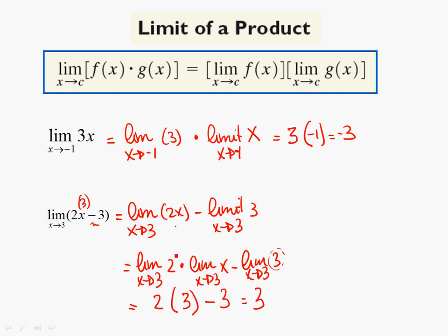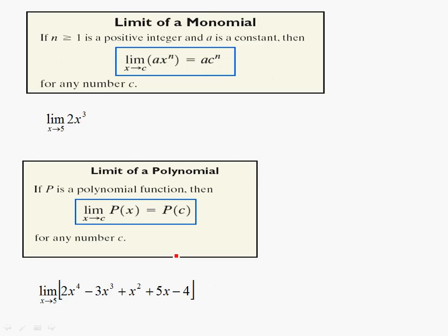Wouldn't it have been a lot easier if I just plugged in the three there? Eventually that's what we're going to be able to do. We'll see that on the next one. So moving on — the limit of a monomial would be what? Well, the reason we have all these little rules and then combine them is so that you can come up with some easier ways to do this.